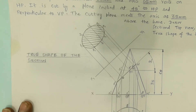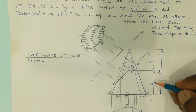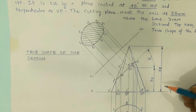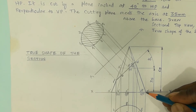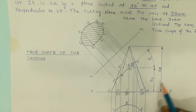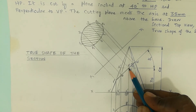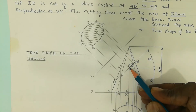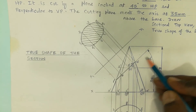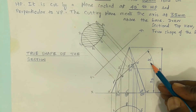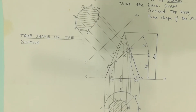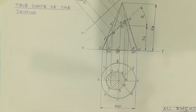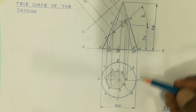Next, dimensioning carries marks, so the dimensions are also shown in this diagram. The cutting plane is inclined at 45 degrees to HP. The total height of the cone is 65 mm. Then 35 mm from the base part of the cone — shown in the front view — 35 mm above the base, the cutting plane is passed meeting the axis, the center line. The cutting plane is inclined at 45 degrees to HP. This is how the diagram appears: front view, sectional top view, and the true shape of the section.